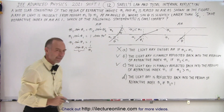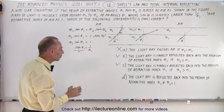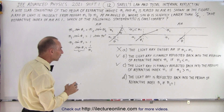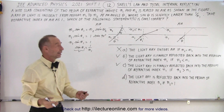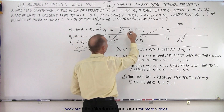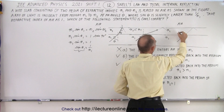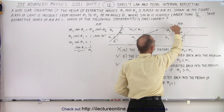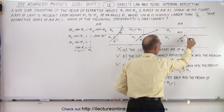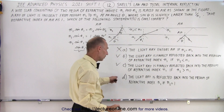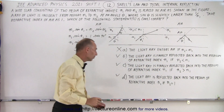Finally, Statement D says the light ray is reflected back into the medium of refractive index N1 if N2 equals 1 — that is, N2 is the same as air. In that case you effectively have total internal reflection right at that interface, and yes, that is also correct.